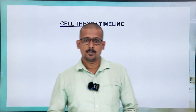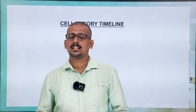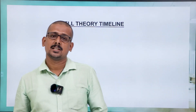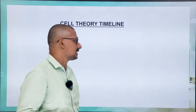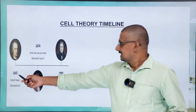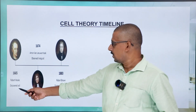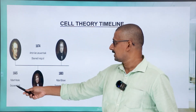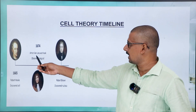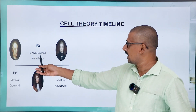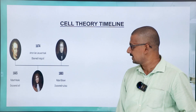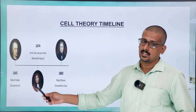Let's begin with the timeline of the cell. First, in 1665, Robert Hooke discovered the cell. Followed by 1674, Anton van Leeuwenhoek observed the living cell. He is the man behind observing the living cell.